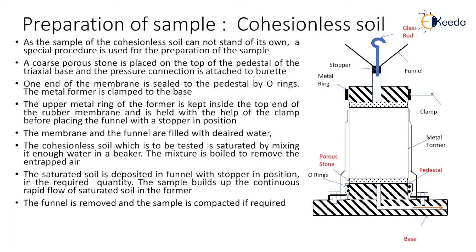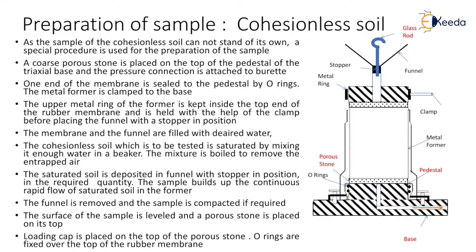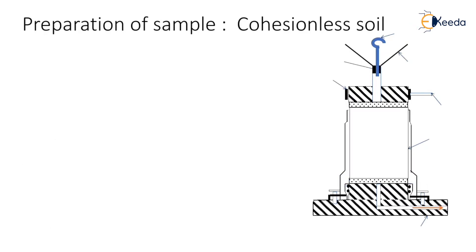The funnel is removed and the sample is compacted if required with the help of a glass rod. The surface of the sample is leveled and a porous stone is placed on its top. A loading cap is placed on the top of the porous stone. O-rings are fixed over the top of the rubber membrane. Once the cohesionless soil is filled inside the metal former it is then consolidated.